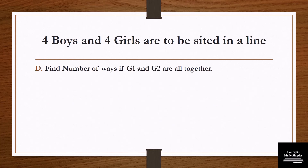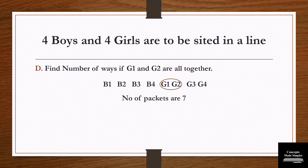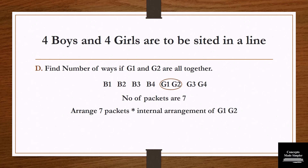The next question: find the number of ways if g1 and g2 are always together. Since g1 and g2 should always be together, we go with the string method — write g1 and g2 together and tie with a string. Number of packets is 7. Solution: arrange 7 packets and multiply by internal arrangement of g1 and g2, giving 7 factorial × 2 factorial.